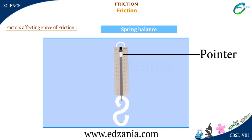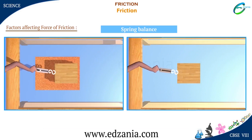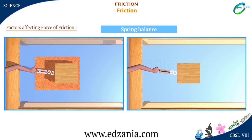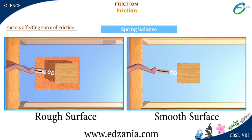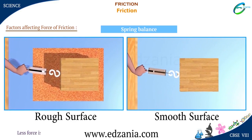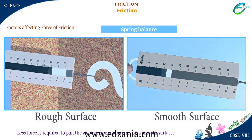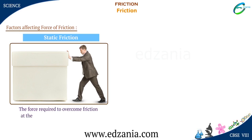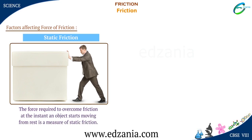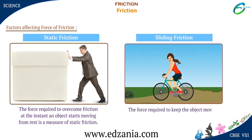Let's perform one experiment with the help of a spring balance. Note the reading of the spring balance just when the wooden block starts moving in two cases. The spring balance shows that less force is required to pull the wooden box when it lies on a smooth surface. We can conclude that smooth surfaces offer less force of friction than rough surfaces. The force required to overcome friction at the instant an object starts moving from rest is a measure of static friction. The force required to keep the object moving with the same speed is a measure of sliding friction.